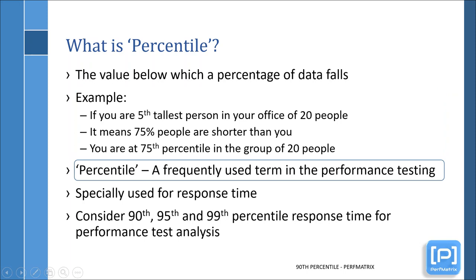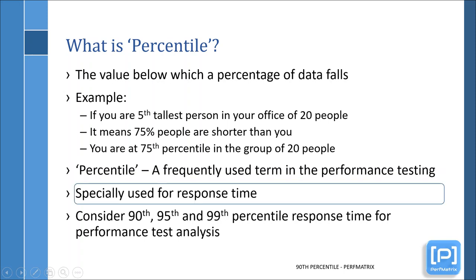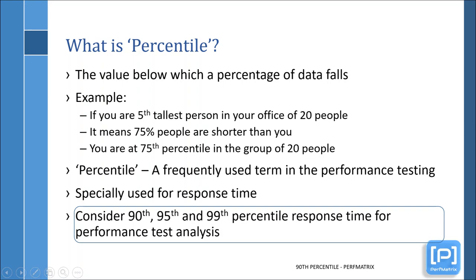Percentile is a frequently used term in performance testing. It is especially used for the response time of transactions or requests. Remember that the response time of a particular request includes server processing time and network journey time. The consideration of percentile depends on the criticality of the business. For normal business processes, 90th and 95th percentile are used, whereas 99th percentile is used for very critical business flows.